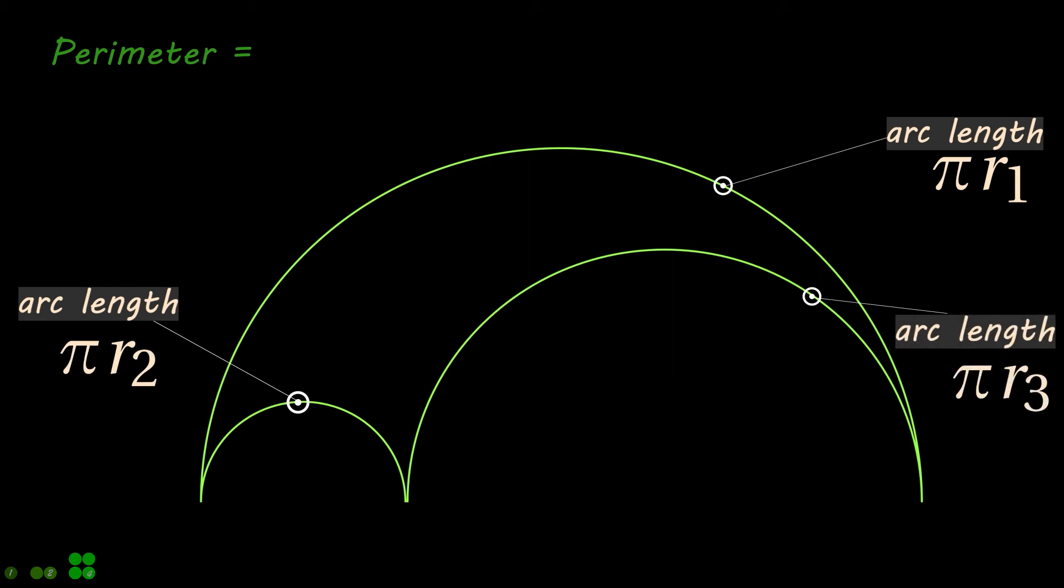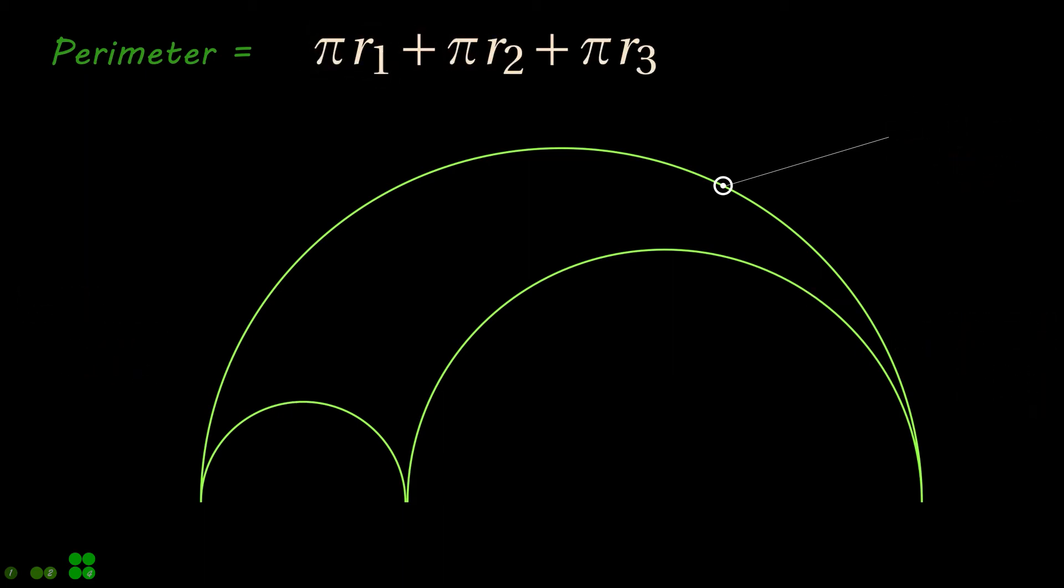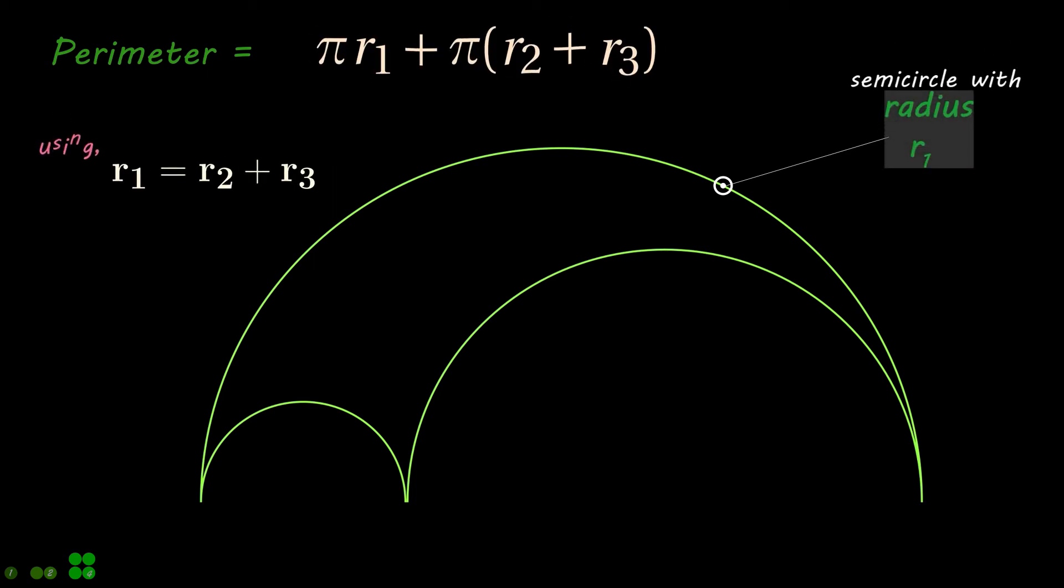The perimeter is the sum of these arc lengths. Let's add these arc lengths and simplify the equation.